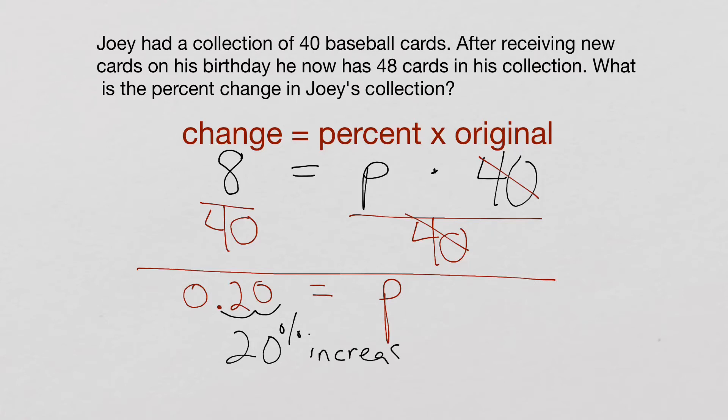Now this is a 20% increase because his number of cards went up. If he had given away 8 cards or sold 8 cards or lost 8 cards, it would have gone down 8. That would have been a 20% decrease. We can have both increases and decreases when it comes to percent change.